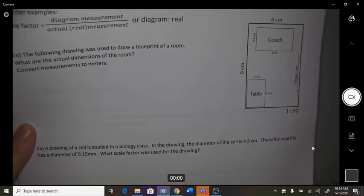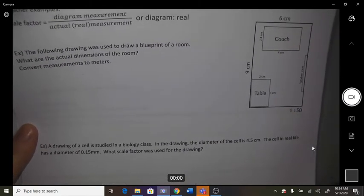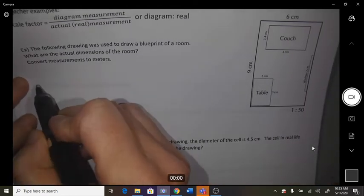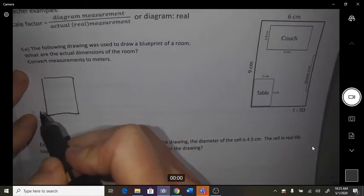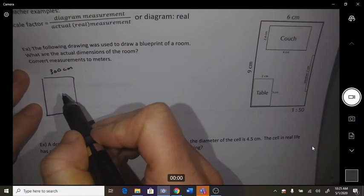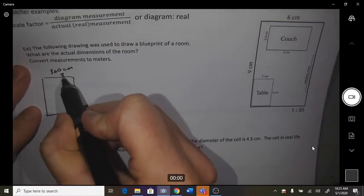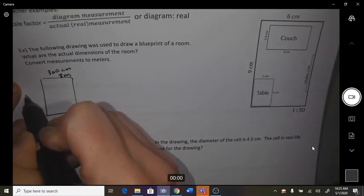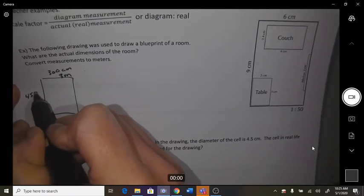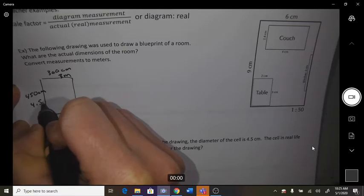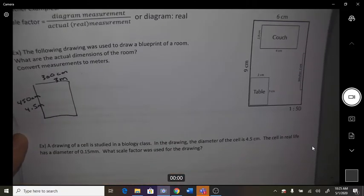The following was used to do a blueprint of a room. What are the actual dimensions of the room? So it says that every one centimeter on the drawing actually is 50 centimeters in real life. So let's do the outside first. So 6 times 50 is 300 centimeters, and if we convert that to meters, that's 3 meters. 9 times 50 is 450 centimeters, or 4.5 meters. So that's the dimensions of the outside of the room.